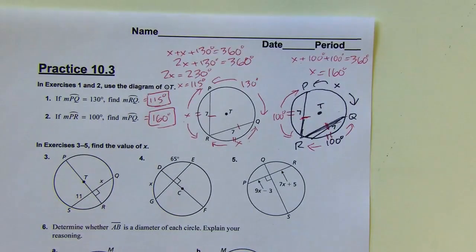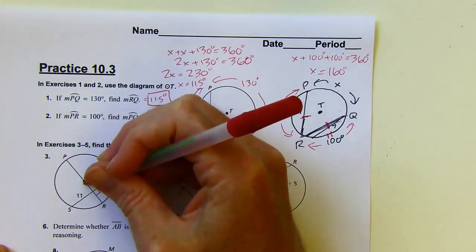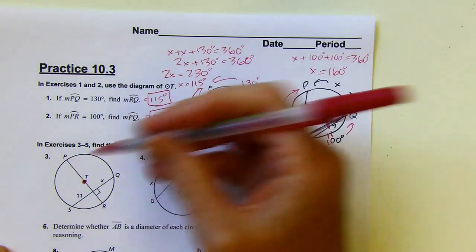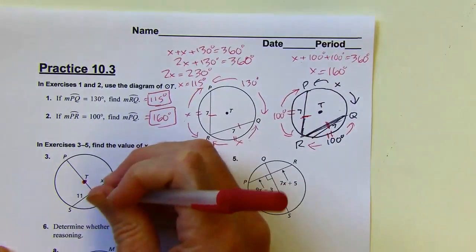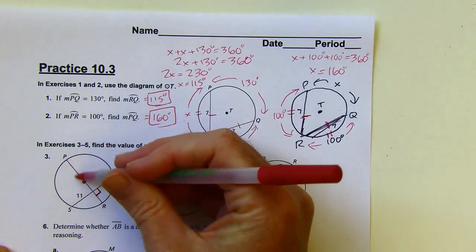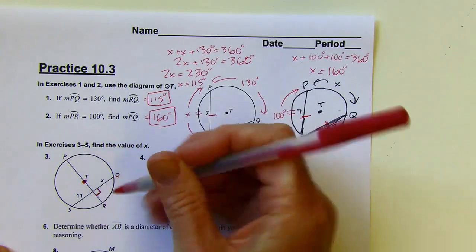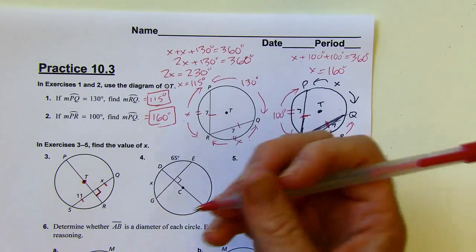And then moving on, this next one says solve for X. Well, this is a diameter. I know it's a diameter because it goes through the center of the circle and goes from one end to the other. It's also perpendicular to this chord, and every time that happens, every time you have a diameter that's perpendicular to a chord, it's going to bisect that chord. So that means X is going to equal 11.